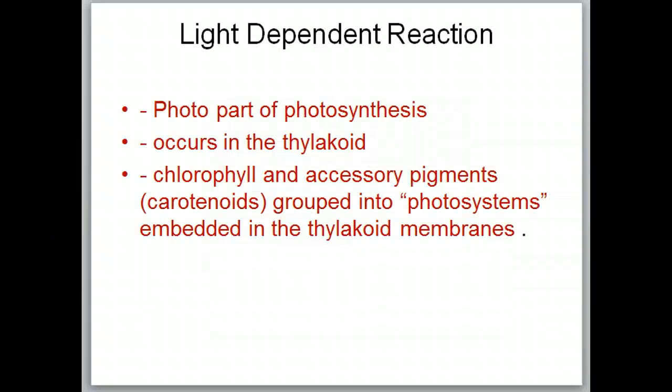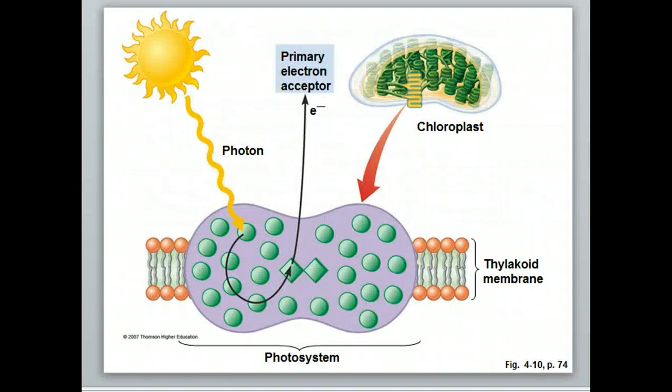The light-dependent reaction is the photo part of photosynthesis, meaning that's the part that actually absorbs the light energy. This occurs in the thylakoid, and chlorophyll and the accessory pigments — which would be chlorophyll B and the carotenoids — are grouped into what are called photosystems that are embedded in the thylakoid membrane. The photosystem is the part that's going to absorb the light energy.